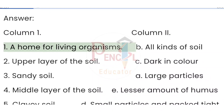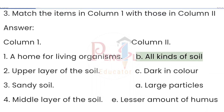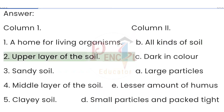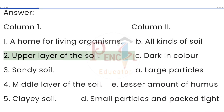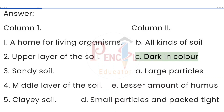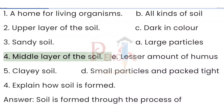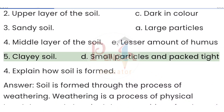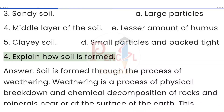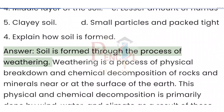Question 3: Match the items in Column 1 with those in Column 2. Answer: (1) A — home for living organisms; (2) upper layer of the soil — B, all kinds of soil; C — dark in color; (3) sandy soil — large particles; (4) middle layer of the soil — lesser amount of humus; (5) clay soil — D, small particles and packed tight.